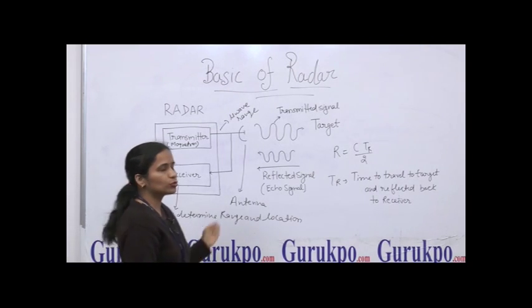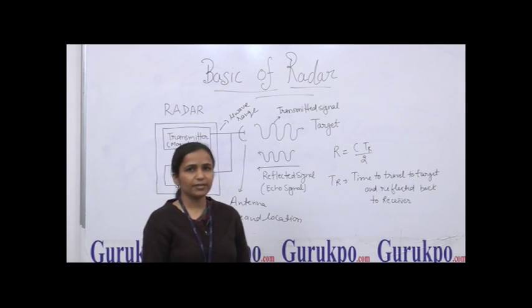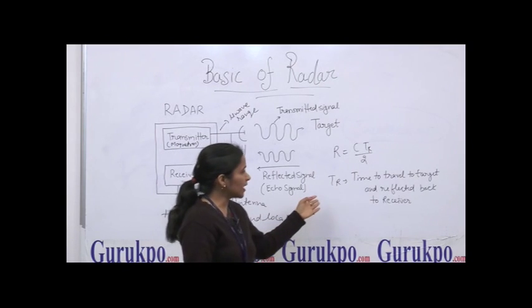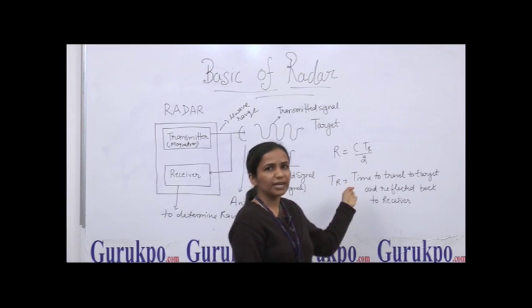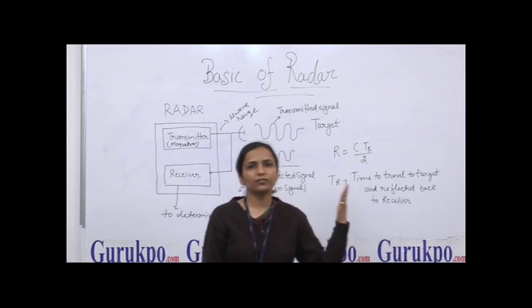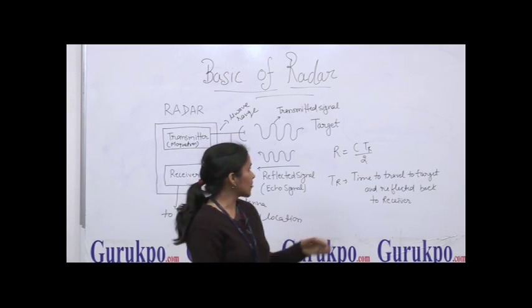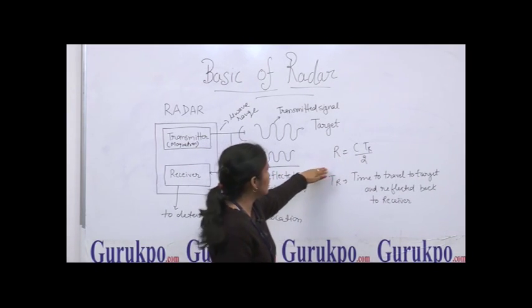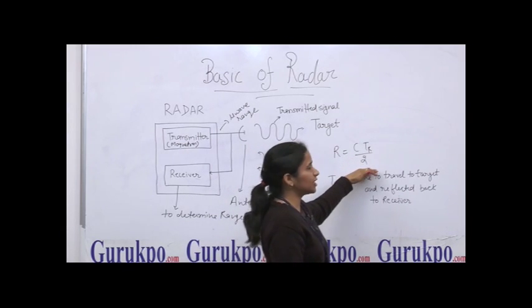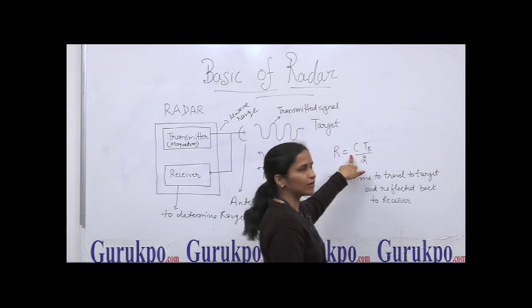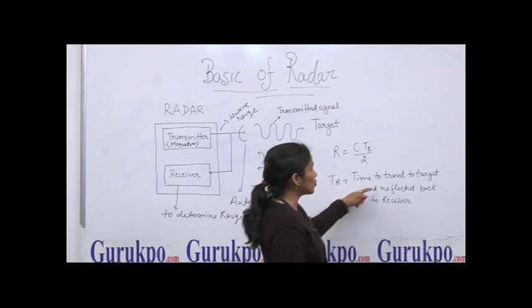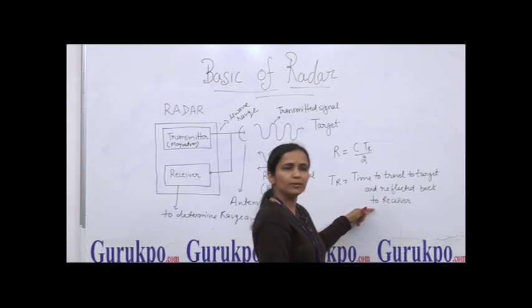The receiver is used to determine the range and location of the target. We can calculate the range by taking the time to travel to the target and back to the radar. Here we use a formula to detect the range, which is R = c·tk/2, where c is the velocity of light and tk is the time to travel to the target and return back to the receiver.